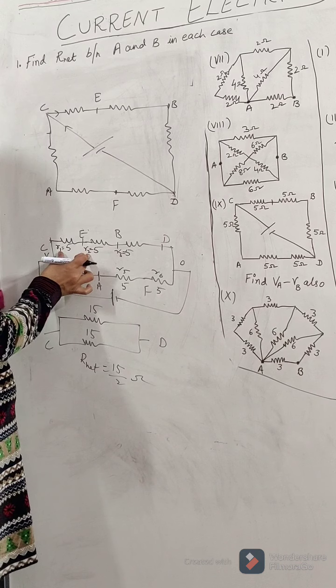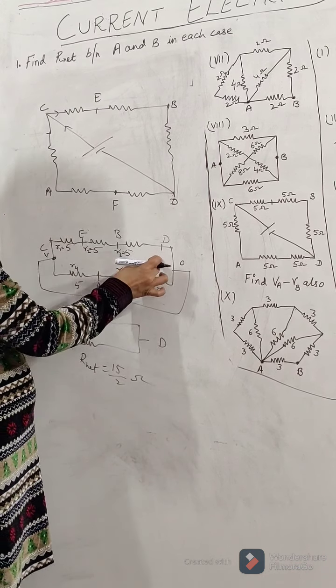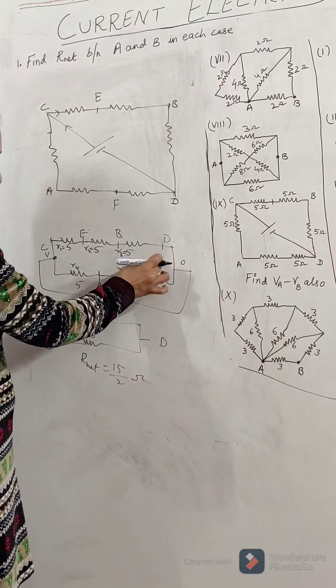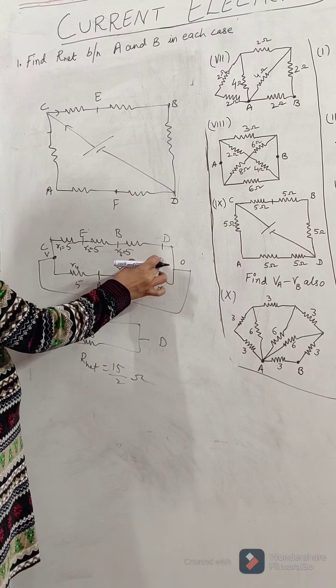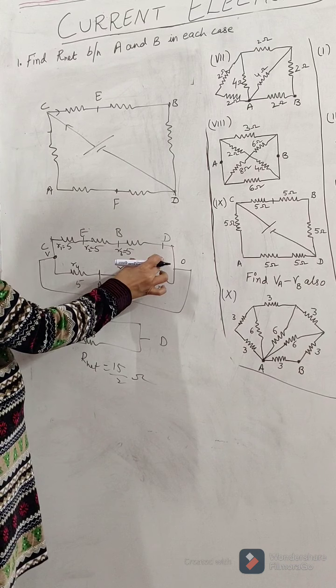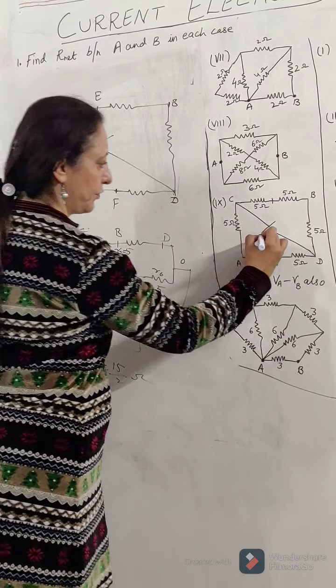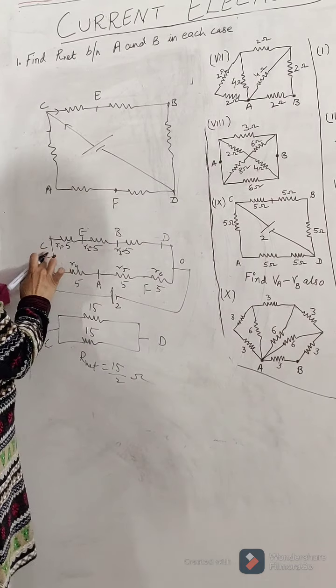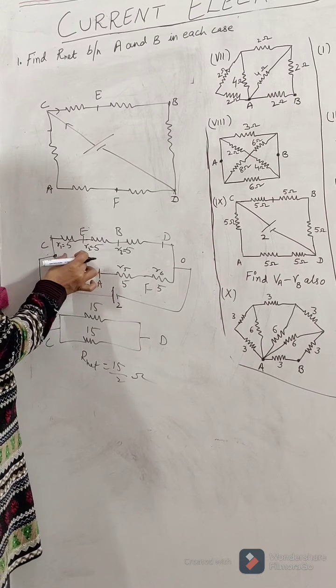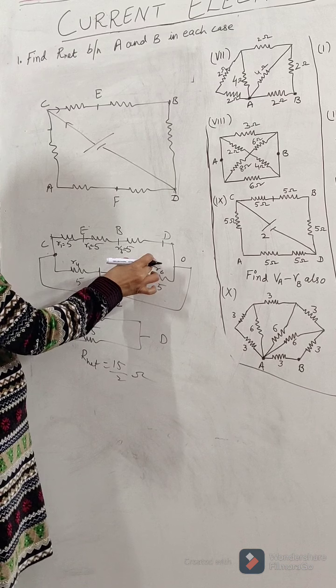That is, C to E cross is V by 3, E to B cross is V by 3, and B to D cross is V by 3. Fine. Has the battery been given over here? I think battery must be given, only then we can do this question. I suppose 2 volt battery must be there in this question. So if 2 volt battery is connected, let us suppose, so this 2 volt has to divide into 3 parts: 2 by 3, 2 by 3, 2 by 3.